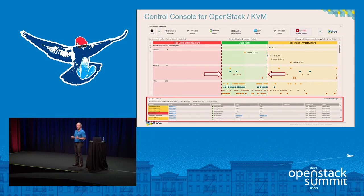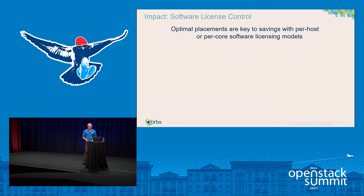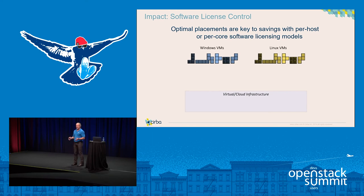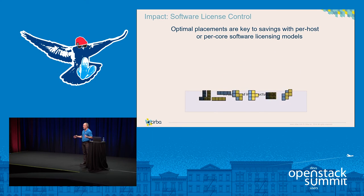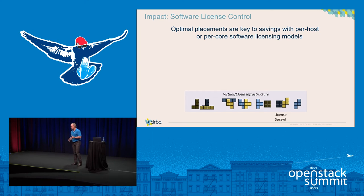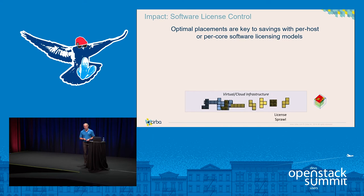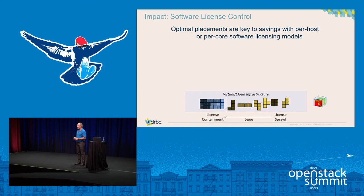Another key element is software license control: how you're using host or core-based licenses. Placement is a key consideration for savings on these licensing models. Using something simple like Windows or Linux VMs, we typically see them scattered across the environment. Some customers don't care about those costs, but others pay a fair bit for host or core-based licenses, and if they're scattered and you're paying on a host basis, you're potentially spending a lot of extra money. Some people artificially try to contain those within boundaries or availability zones, but when you have more than one software license to control, that becomes very difficult. Using analytics on a daily basis to fit these things within a smaller subset of hosts yields big savings.